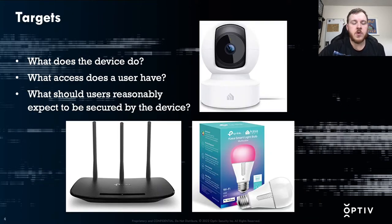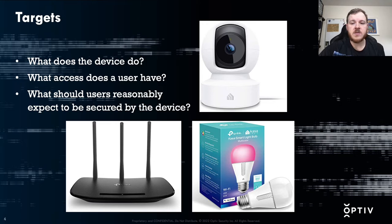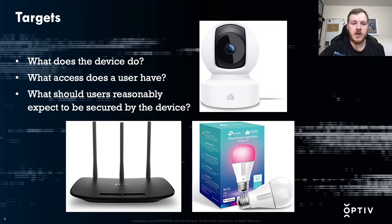When you're choosing a target, you want to look at what the device does, what the end user has access to, and what things should be secured by the device. For this presentation I chose three devices: a router, a camera, and a smart bulb. The router connects to a modem and serves wireless internet, and it should protect your Wi-Fi keys and access to your network. The camera has a live security feed that should be protected to only people with the password. The bulb is pretty much just on or off with a color choice, but you don't want random people to be able to do that.